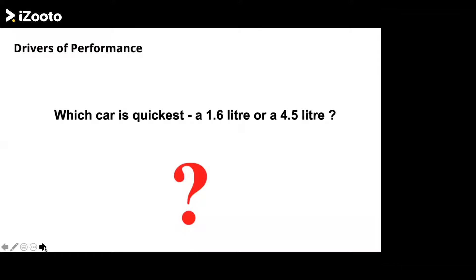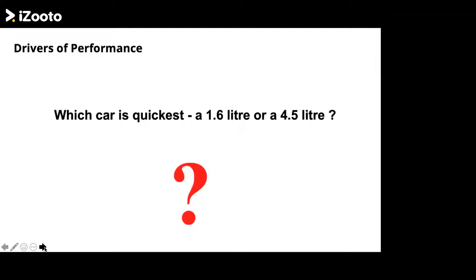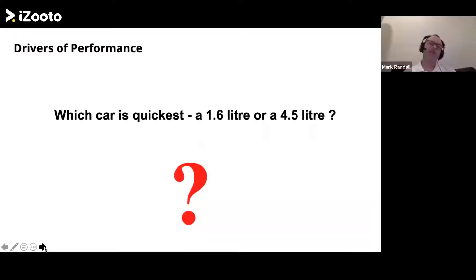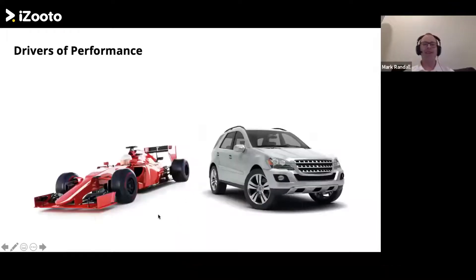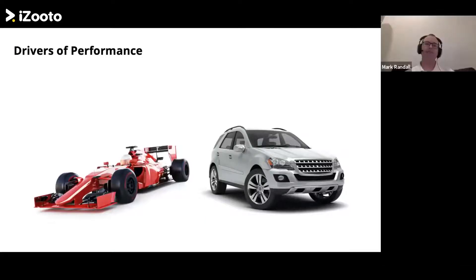You'd probably say the 4.5 is faster than a 1.6, right? But what if the 1.6 is a Formula One Ferrari and the 4.5 is a Toyota Land Cruiser diesel — which is faster then? What if the race is a thousand kilometers long and you can't refuel?